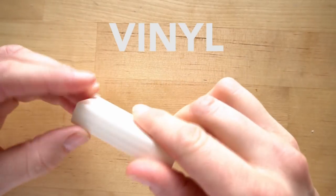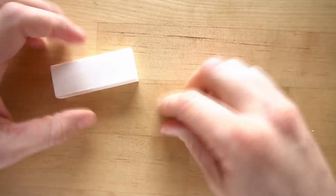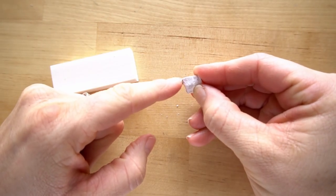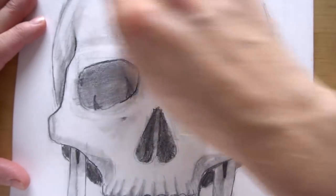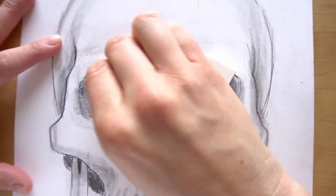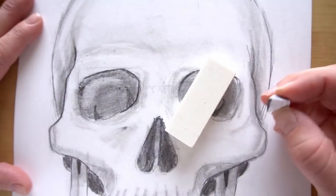All right next let's talk about this white vinyl eraser. I actually prefer to use this more for small details just because if I tear it not only do I have a small little point, this is really firm so it's a lot easier for me to erase something with this. This works similarly to the gum eraser. The gum eraser and the vinyl eraser are pretty similar.